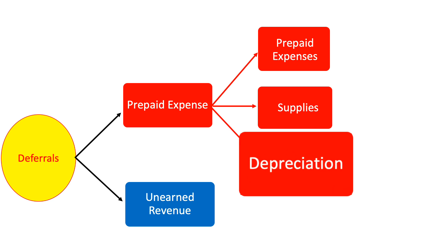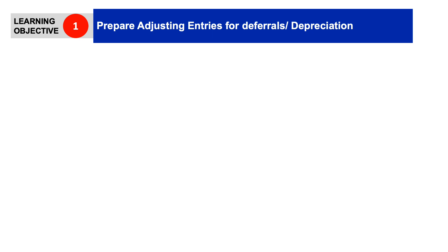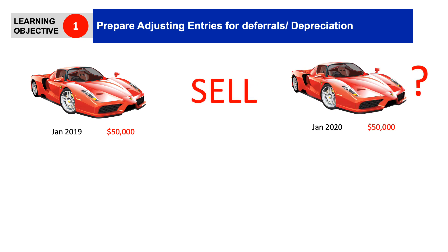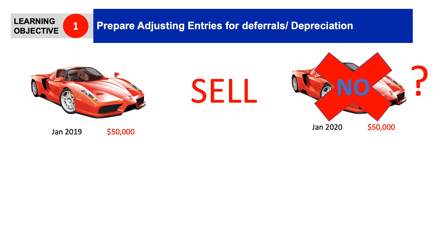Let's begin with an example. Let's say that on 2019 I bought a car for $50,000. Later on during 2020 I decided I want to sell this car. Do you think I can sell my car in 2020 for the same price — $50,000? No. Why? Because during this year my car lost part of its value. This decrease in the value of my asset from one year to another is what we call depreciation.